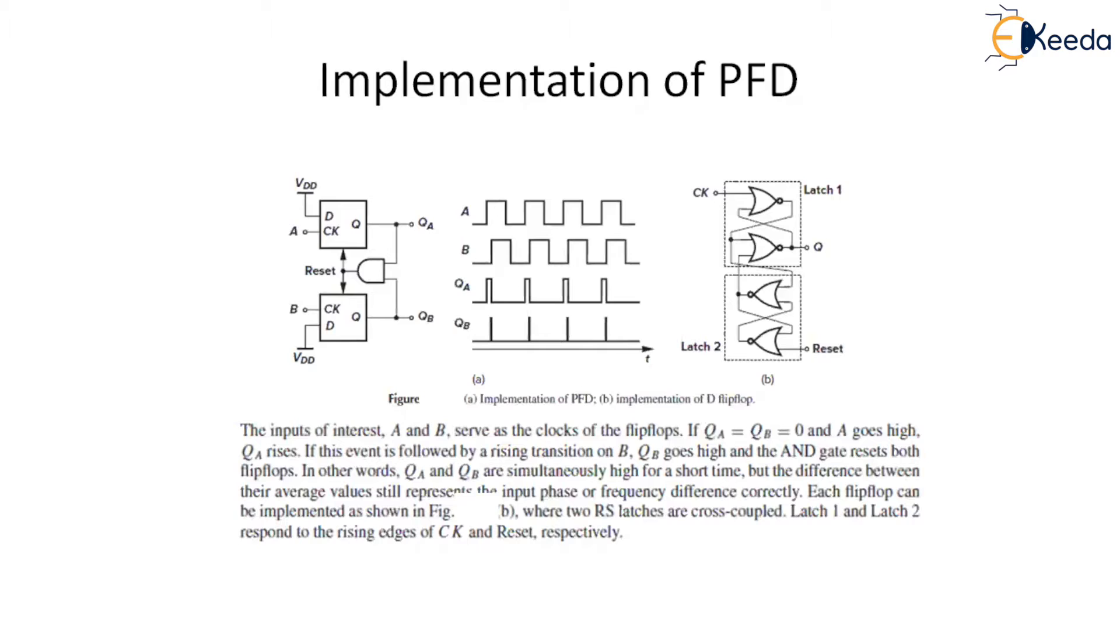Now let us see the implementation of this phase frequency detector. Here in this figure, it shows an implementation which consists of two edge-triggered resettable D flip-flops with D input tied to a logical one, that is VDD. The inputs of interest, A and B, serve as the clock of the flip-flops. If QA and QB is 0, A goes high, then QA will rise. And if the event is followed by a rising transition on B, then QB goes high and the AND gate resets both flip-flops. Or we can say in other words, QA and QB are simultaneously high for a short time.